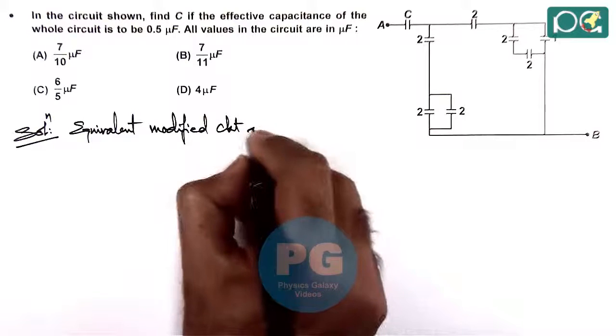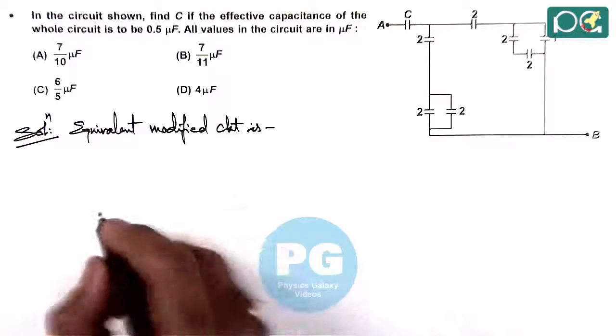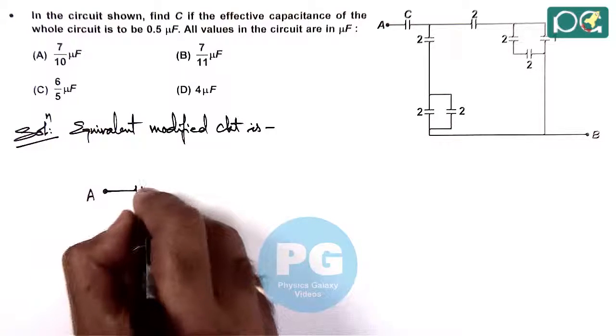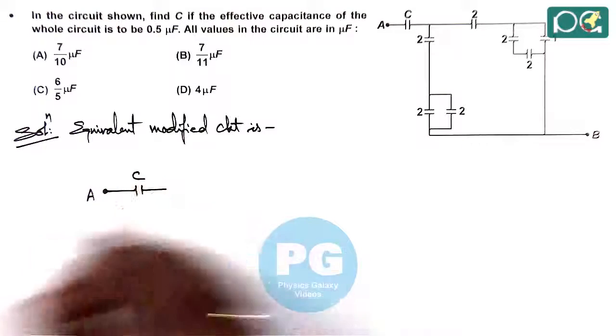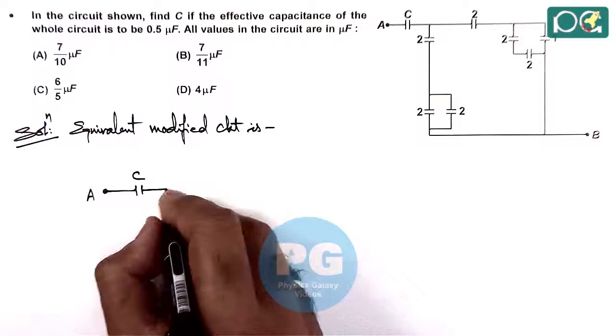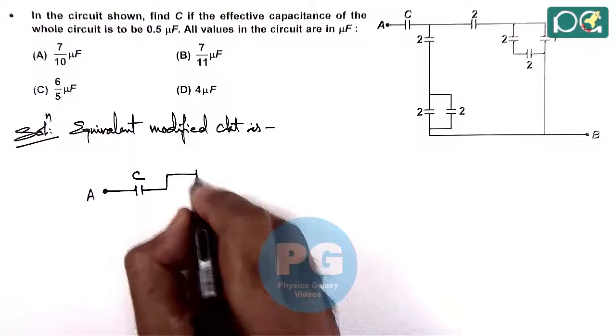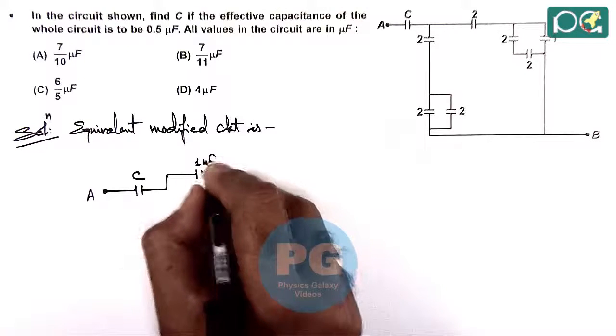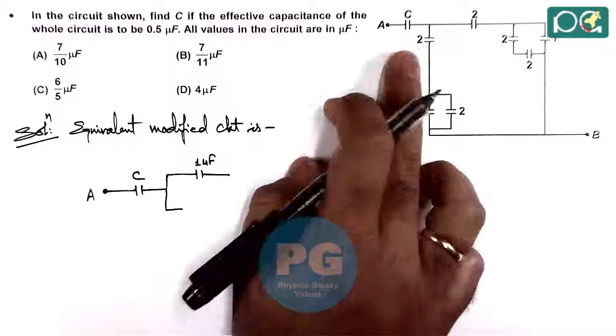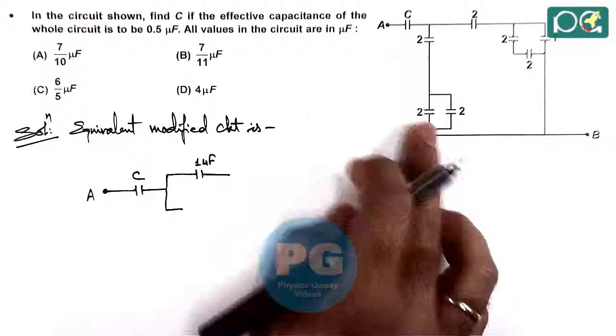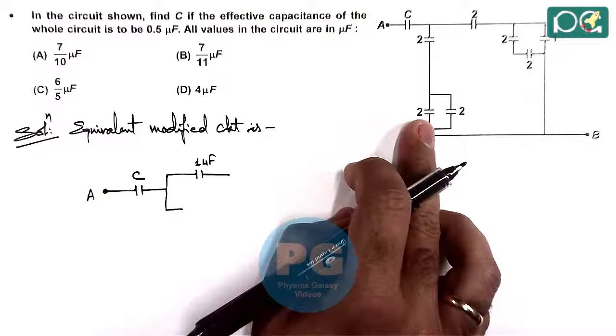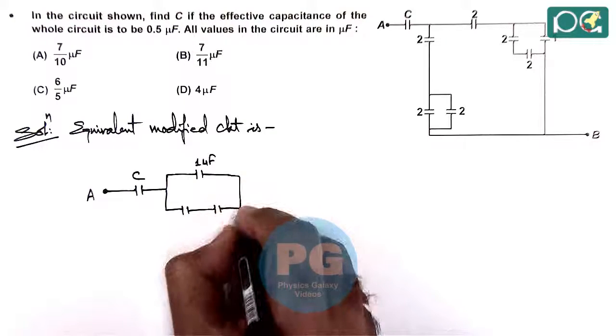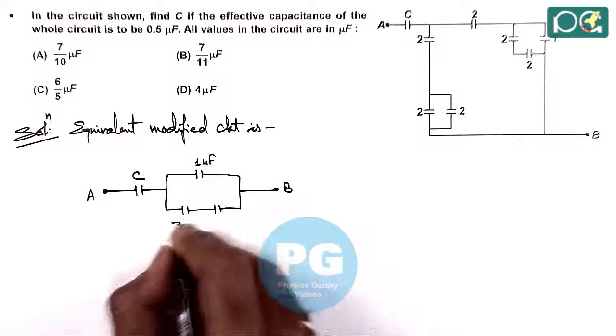The equivalent modified circuit shows point A where we have C, and on the other side we have one capacitance of one microfarad. The other would be two and four in series, which gives us two and four microfarad.